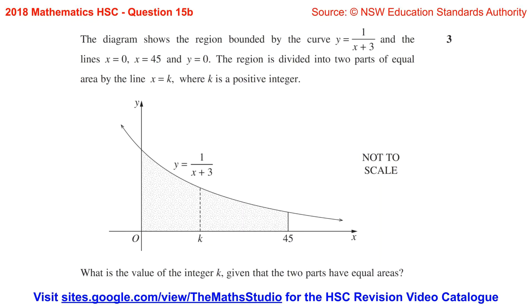x equals 45 and y equals 0. The region is divided into two parts of equal area by the line x equals k where k is a positive integer.